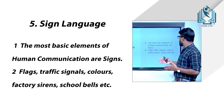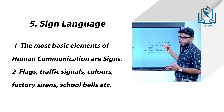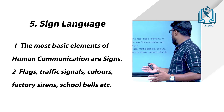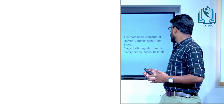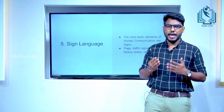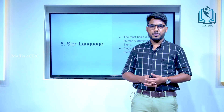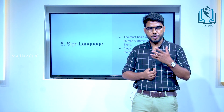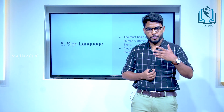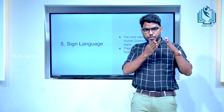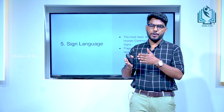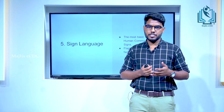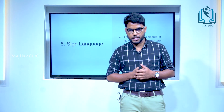The last one is sign language. The most basic elements of human communication are signs — flags, traffic signals, colors, factory sirens, school bells, etc. are examples of sign language. This concludes our topic on human communication, covering its features and the distinction between verbal and non-verbal communication. I hope you understood this class. We will meet in the next class. Thank you.